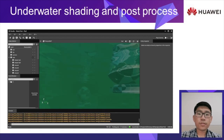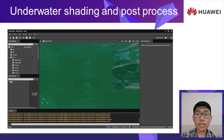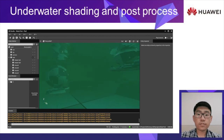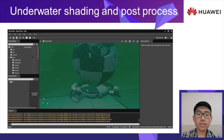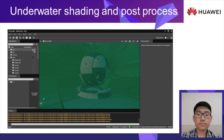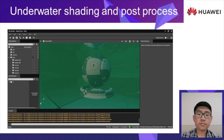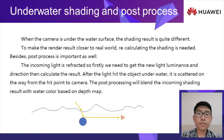Underwater rendering is a quite important part of the water system. When the camera is below the water surface, objects perform quite differently. For a pixel on these objects, the incoming light is scattered and the reflected light will be scattered as well. We need a new shading calculation and some post-processing. Considering the incoming light, it is refracted when it goes through the water surface, so the light direction needs to be modified. The light color should be blended with the water color based on the depth of the current pixel. After these two steps, we do the shading as usual, then blend the shading result with water color based on view depth. The skybox illumination is not changed, which does not influence the result significantly.